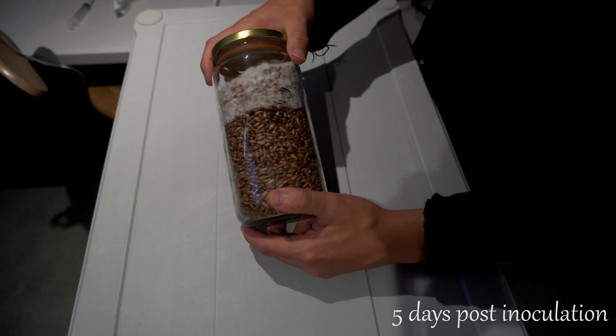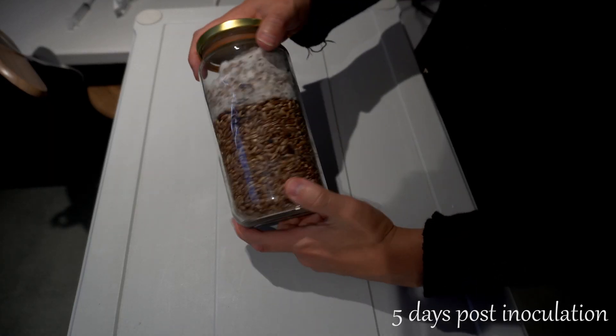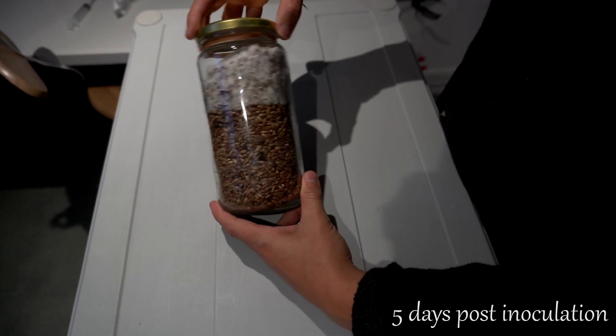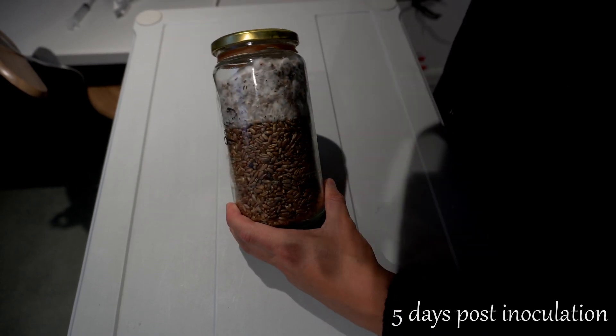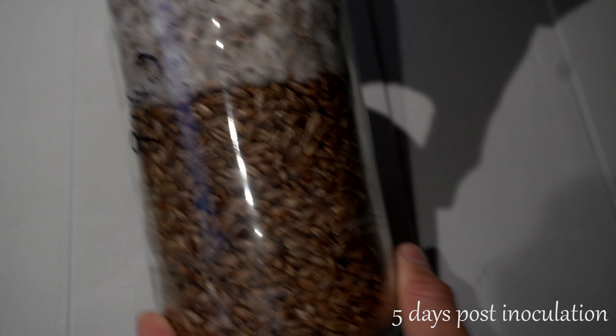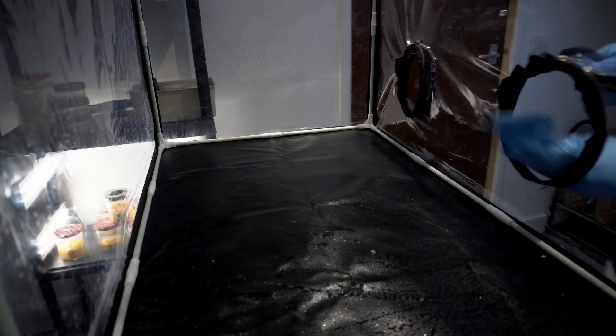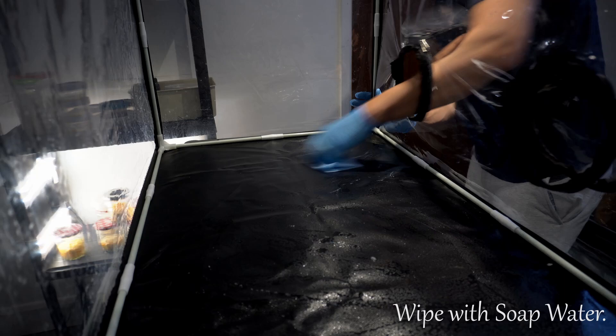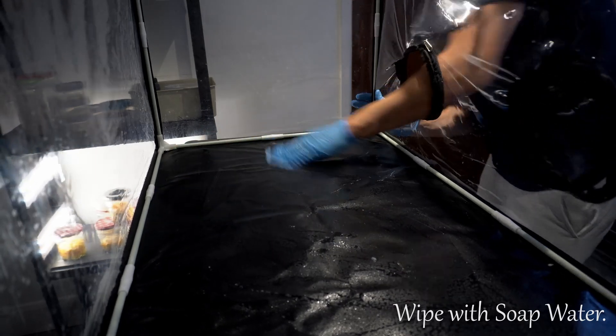In this video I'll be covering how to do grain to grain inoculation inside of a still air box. Grain to grain inoculation is probably the best way to expand spawn quickly and efficiently. By transferring colonized grain to sterile grains you can rapidly produce lots of mycelium for mushroom cultivation.